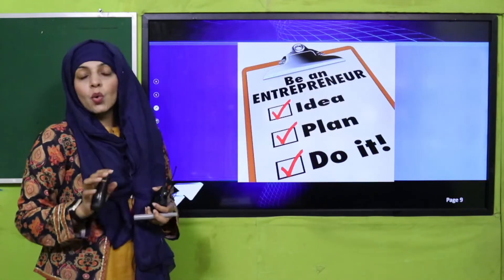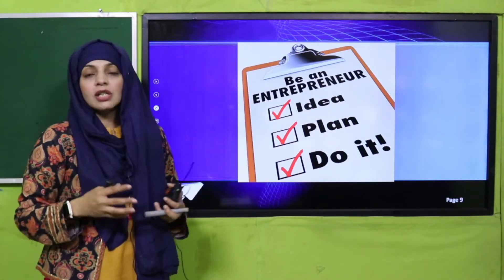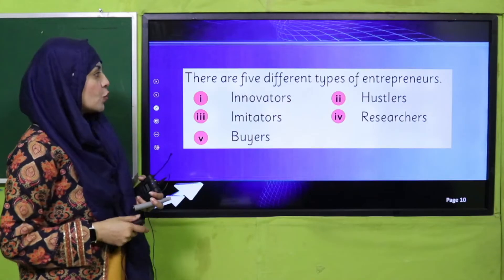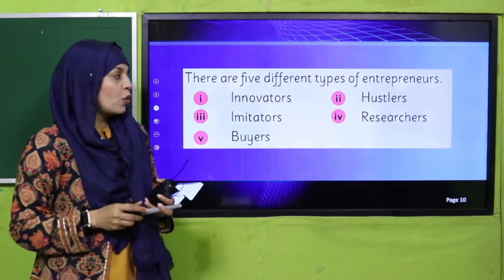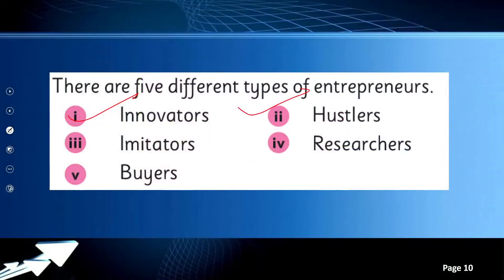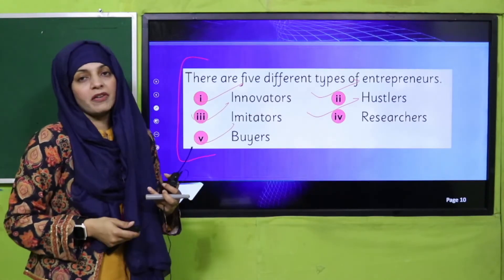My dear students, who is an entrepreneur? They have an idea, a plan, and then they just do it. There are five different types of entrepreneurs: innovators, hustlers, imitators, researchers, and buyers. These are the five types of entrepreneurs. Let's read about them and see how each one differs from the other.